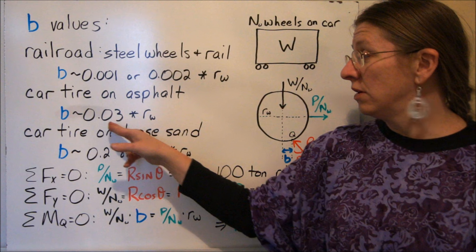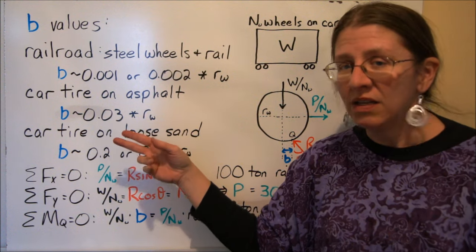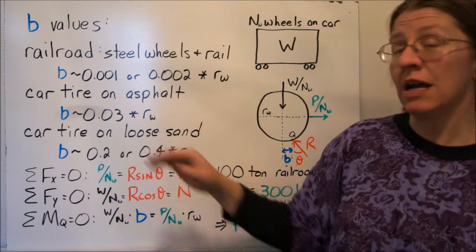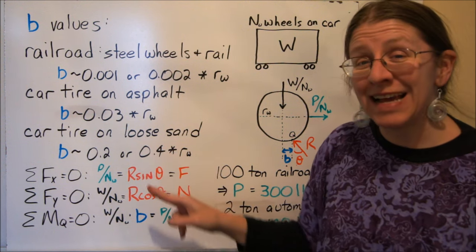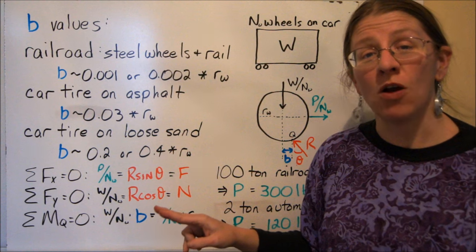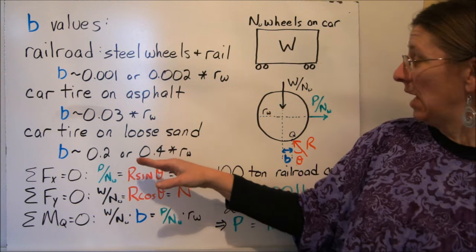Car tires on asphalt end up being 10 times that, 0.03. Car tire on loose sand, it takes again 10 times more power to keep the car rolling on loose sand than it does for these other two cases.